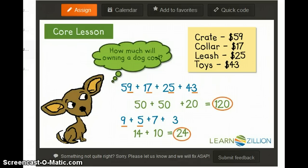120 and 24 are the partial sums, so I need to add them together to get the final answer. 120 plus 24 equals 144, so the dog supplies will cost $144.